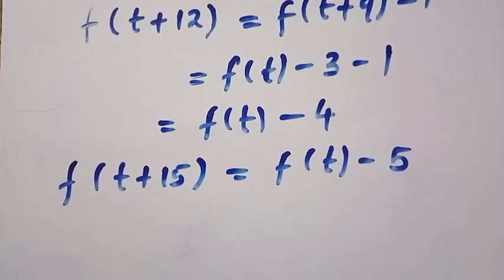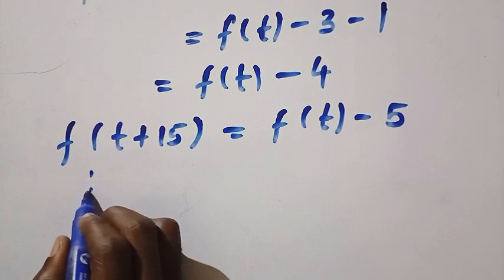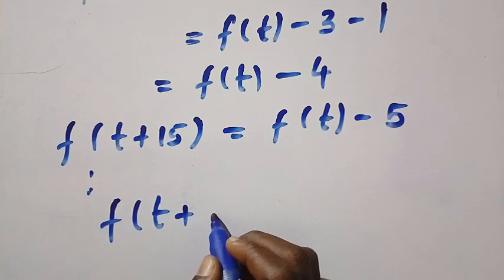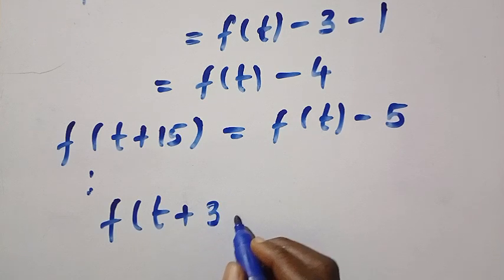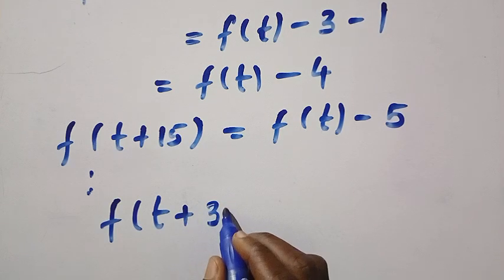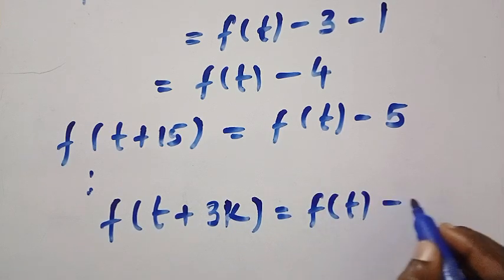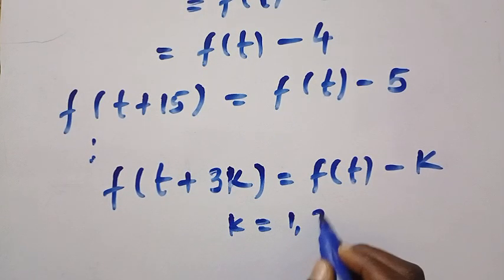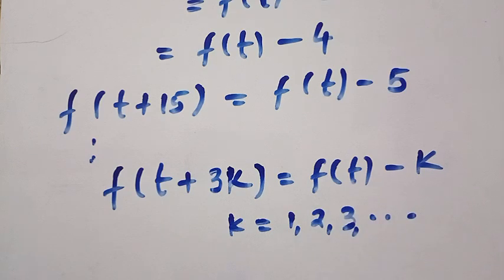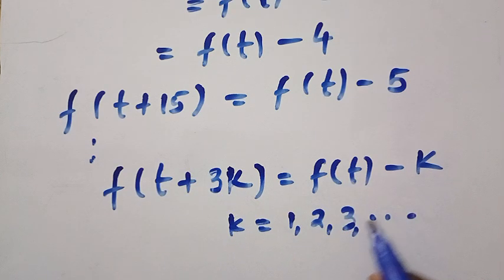So let's derive this in a general form. The general form will be: f of t plus 3k equals f of t minus k, where k equals 1, 2, 3, and so on. For example, when k equals 1, we have f of t plus 3 equals f of t minus 1.